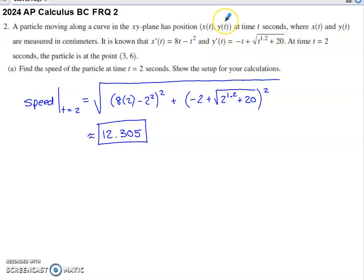So since x(t) and y(t) represent position, x' is going to be the velocity component in the x direction, and y' is going to represent the velocity component in the y direction. They tell us at time 2, we've got the particle at the point (3, 6).